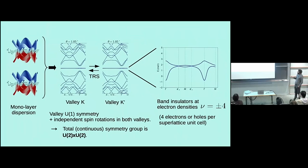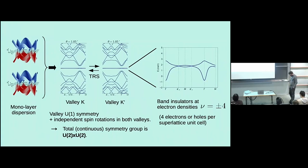For low energy electrons, we can plot their energy as a function of momentum in the reduced Brillouin zone — the mini Brillouin zone — as a function of this angle. And then something magic happens at this special angle: we get these flat bands isolated from the other more dispersive bands. The electronic wave functions of these flat band electrons are strongly peaked at these AA regions, so these electrons mostly live on these AA regions.